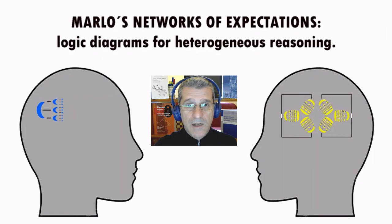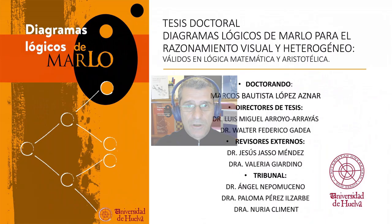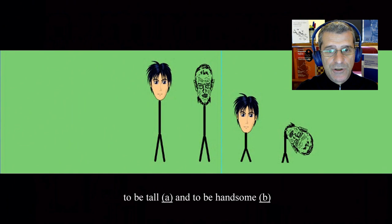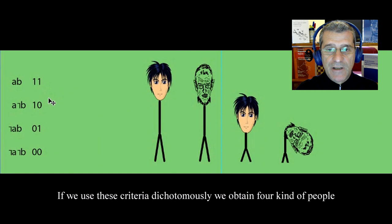Marlow's Networks of Expectations, based on the doctoral thesis Marlow's Logical Diagrams for Visual and Heterogeneous Reasoning. Suppose we classify people according to two criteria: to be tall A and to be handsome B. If we use these criteria, we obtain four kinds of people.